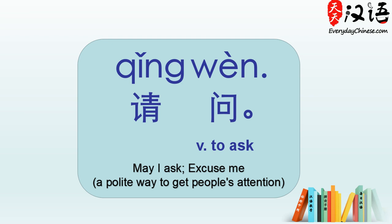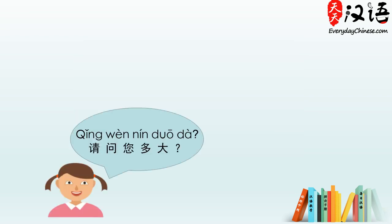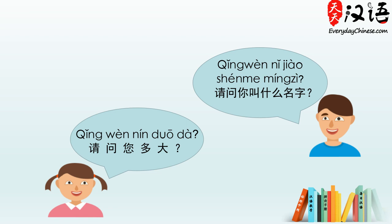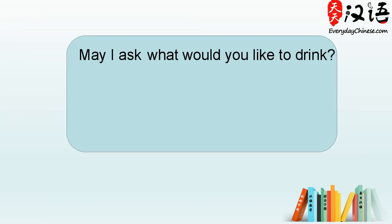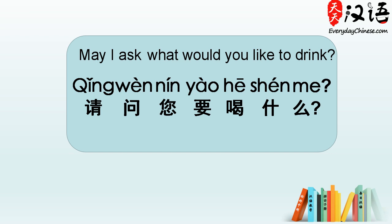So when we would like to ask someone a question, we can start the sentence with 请问. For example: 请问，您多大? 请问，您叫什么名字? 请问，您的电话号码是多少? So we will ask: 请问，您要喝什么?